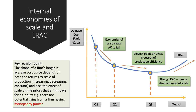The key revision point is that the shape of the average cost curve in the long run depends on both the returns to scale of production — for example, from Q1 to Q2 we see increasing returns to scale, and from Q2 to Q3 average cost is still falling — but also the effect of scale on the prices the firm pays for its key inputs. As you move from Q1 to Q2 to Q3, the firm can use its monopsony power to bring down the unit cost of raw materials or component parts.